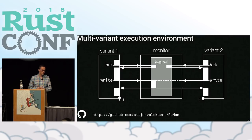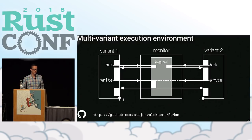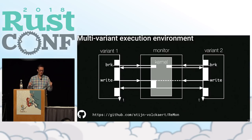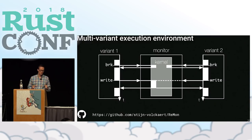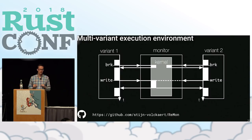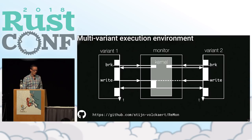The idea is you have two variants of the same program — in our case a C program and the translated Rust program. As soon as they make a system call, a monitoring component intercepts system calls and forwards them to the kernel. For example, for a BRK call to allocate memory, the monitor forwards both calls. For a write system call, the monitor intercepts both but only forwards one to the kernel, then sends the results back to both processes. Essentially the monitor provides the host with the illusion of one process running, when in fact two processes are running and doing the same thing, receiving the same input — and the monitor cross-checks that both variants produce the same output.